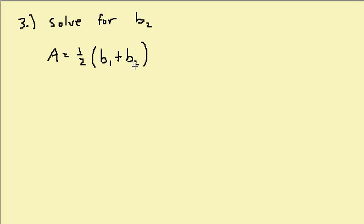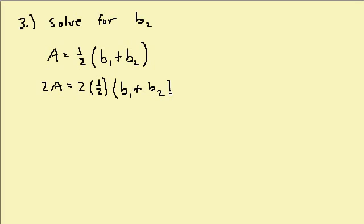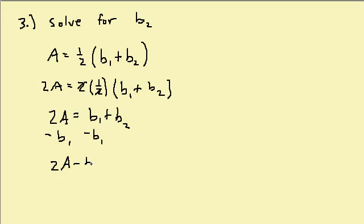Let's solve this one for B2. I have a fraction in here again, so I'm going to multiply both sides by the common denominator, which is 2. That gives 2A equals one-half times the quantity B1 plus B2, so I'm left with 2A equals B1 plus B2. I'm solving for B2, so I subtract B1 from both sides. I get 2A minus B1 equals B2.